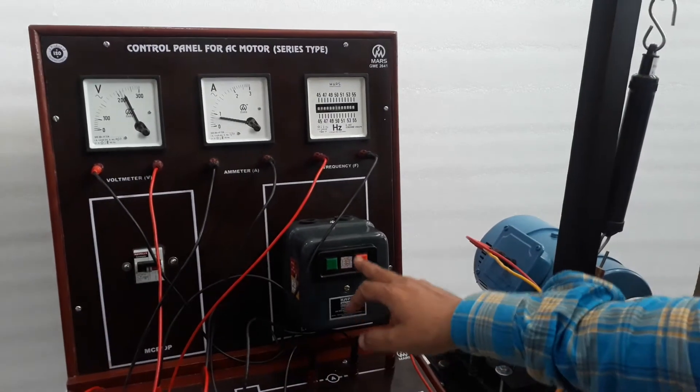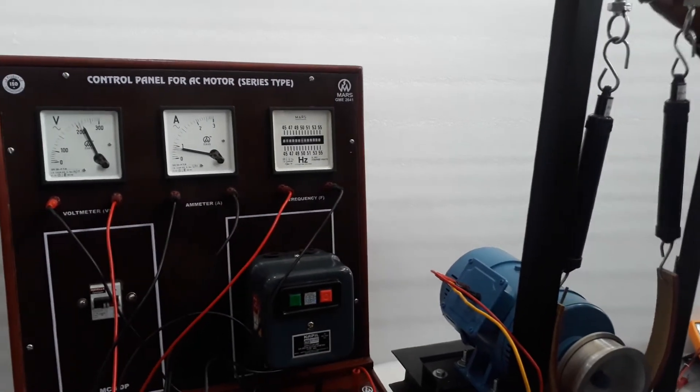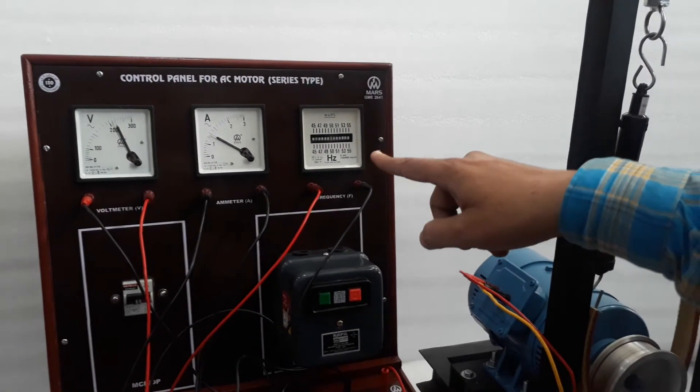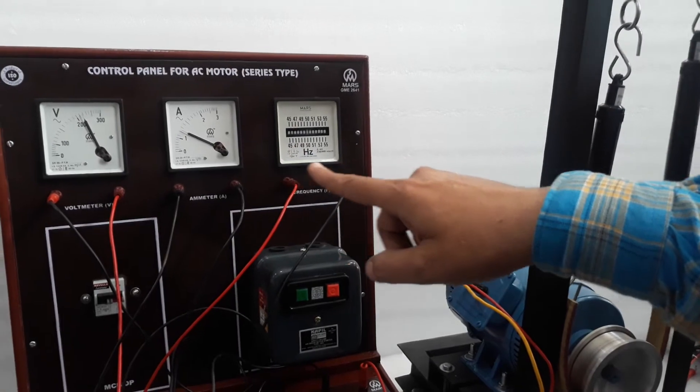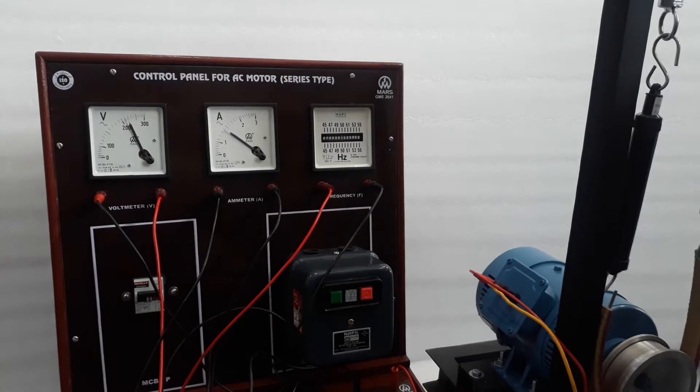Now motor RPM is 1500. And now press the load. Here the current increases and voltage decreases. Note the voltage and current reading.